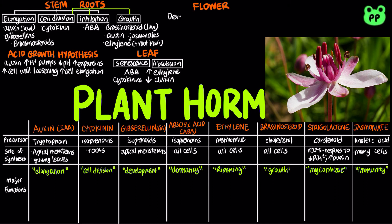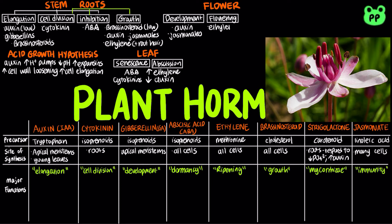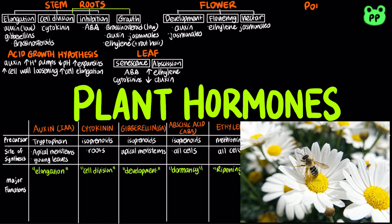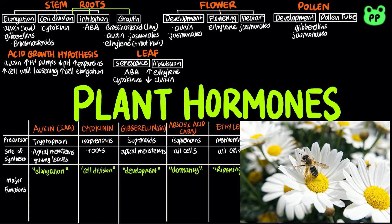Flower development is stimulated by auxin and jasminates. Flowering is stimulated by ethylene, and nectar production is stimulated by jasminates. Pollen development is stimulated by gibberellins and jasminates, and pollen tube formation is stimulated by gibberellins, jasminates, and brassinosteroids.